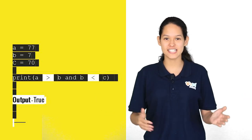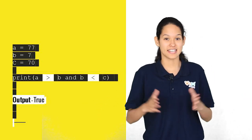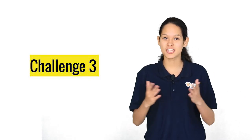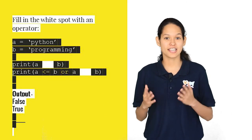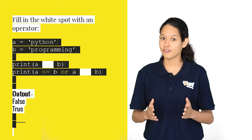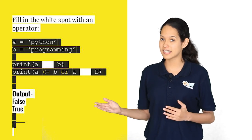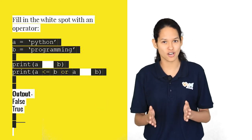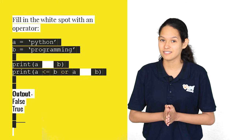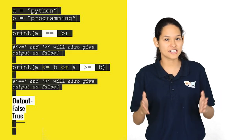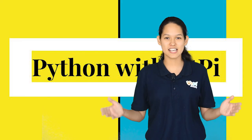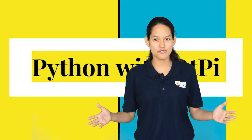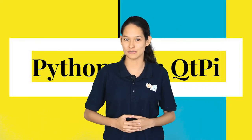Hope you guys got it right — here's the solution. Now it's time for your third challenge. In this challenge we have two strings. Can you try comparing them by filling in the print statement with the appropriate relational operator? This one was a little tricky. Here's the solution. This brings us to the end of our video. Thank you for watching and see you in the next video.